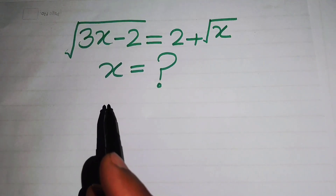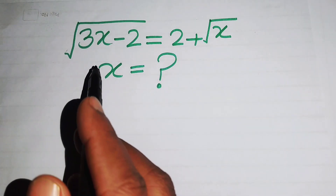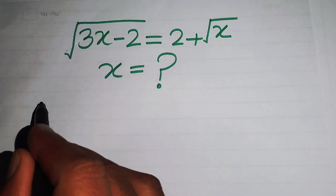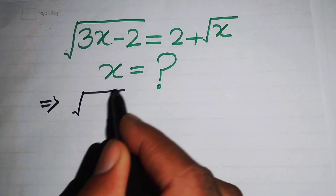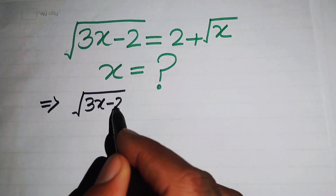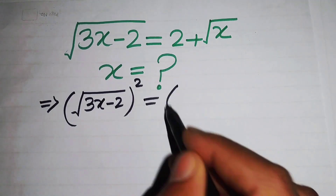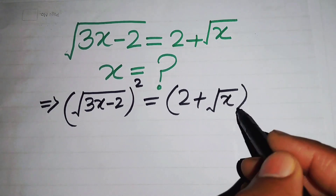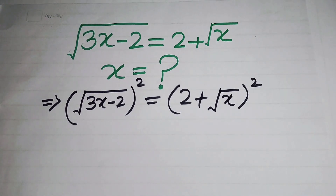The very first thing we do is take the squaring on both sides of the given equation. We write the equation in this form: the whole square of the square root of (3x minus 2) equals the whole square of (2 plus the square root of x).